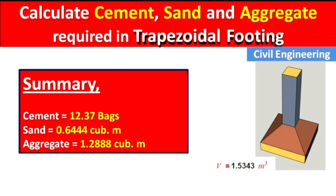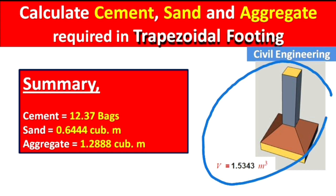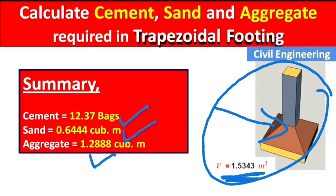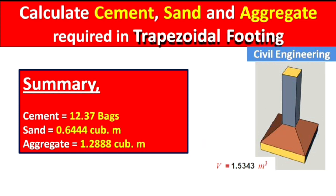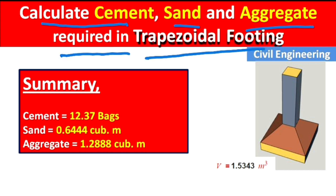Summary: To construct a trapezoidal footing with a total concrete volume of 1.5343 m³, we require 12.37 bags of cement, 0.644 m³ of sand, and 1.2888 m³ of aggregate. In this way we can calculate the cement, sand and aggregate required for a trapezoidal footing. Please like this video and subscribe to the channel for new updates about civil engineering.